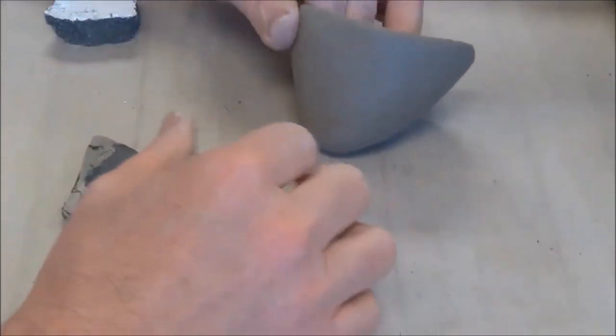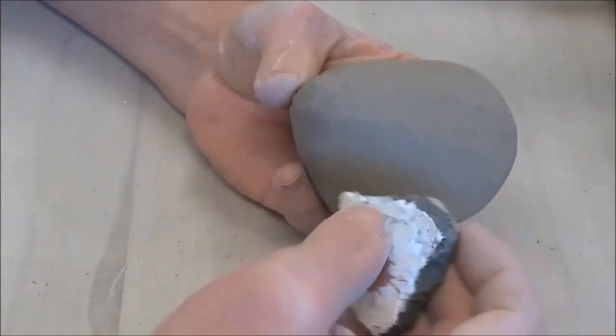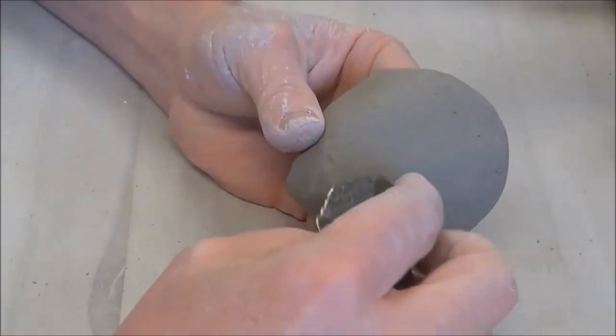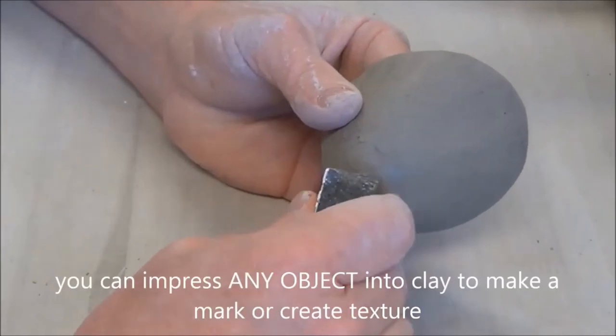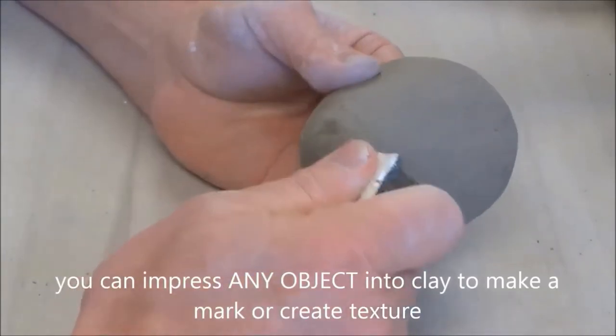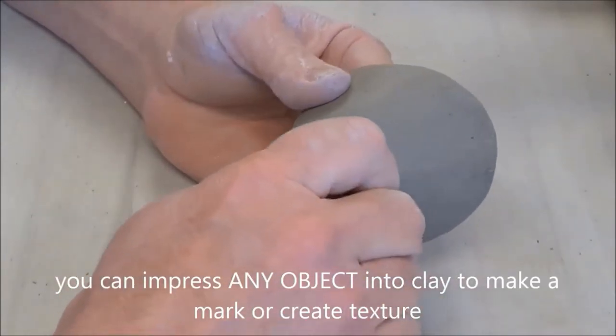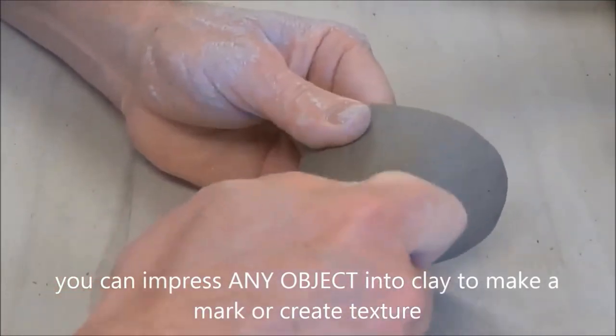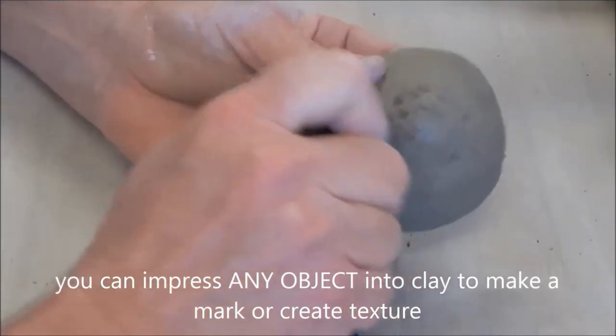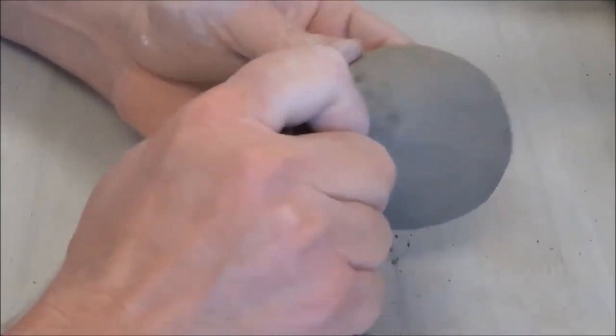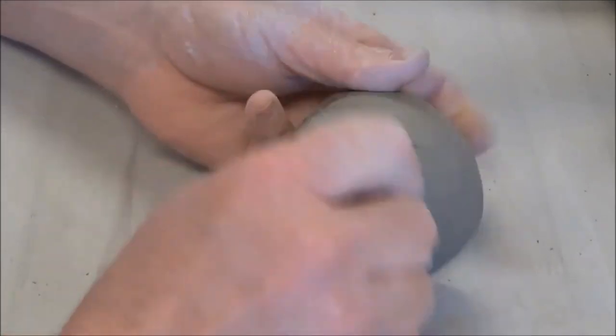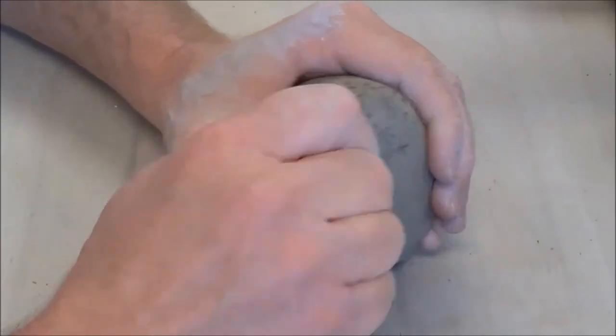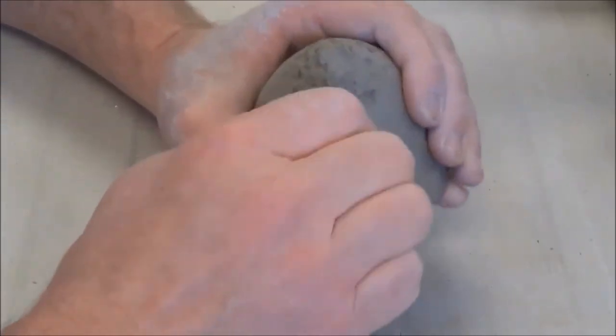Okay guys, so the first technique I want to show you is stamping. What I have here is a cleaned up surface and just a broken shard that I found outside. I'm going to use this to repeatedly mark a surface here to create pattern or a new texture.